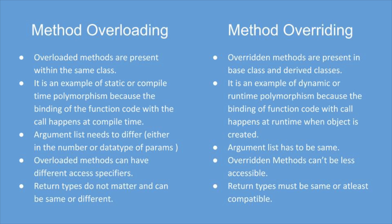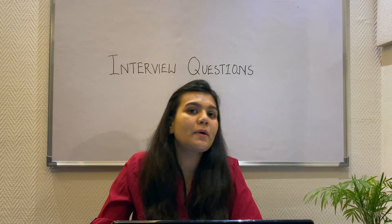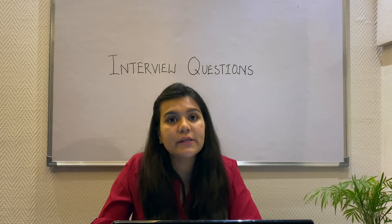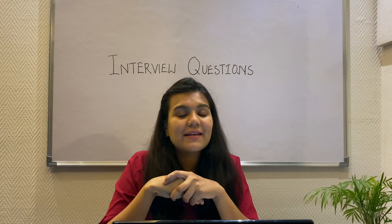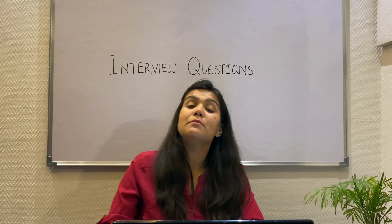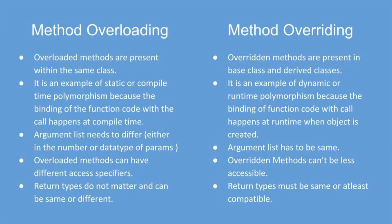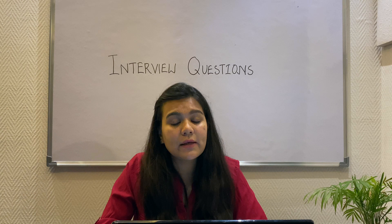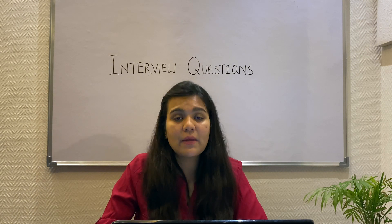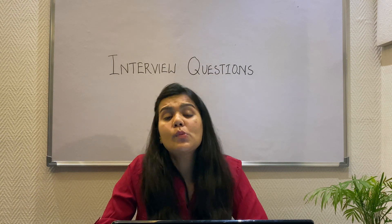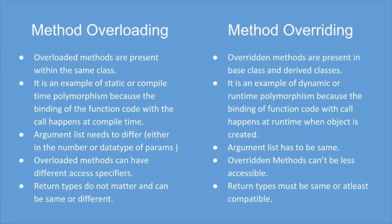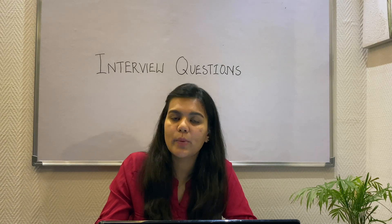But in method overriding, the overridden methods cannot be less accessible — I discussed this in my previous video on dynamic polymorphism and the two conditions that had to be fulfilled; please look for the link in the description box. In method overloading, the return types do not matter and can be same or different. Note that two methods with the same name are not differentiated based on return types. While in method overriding, return types must be the same or at least compatible.